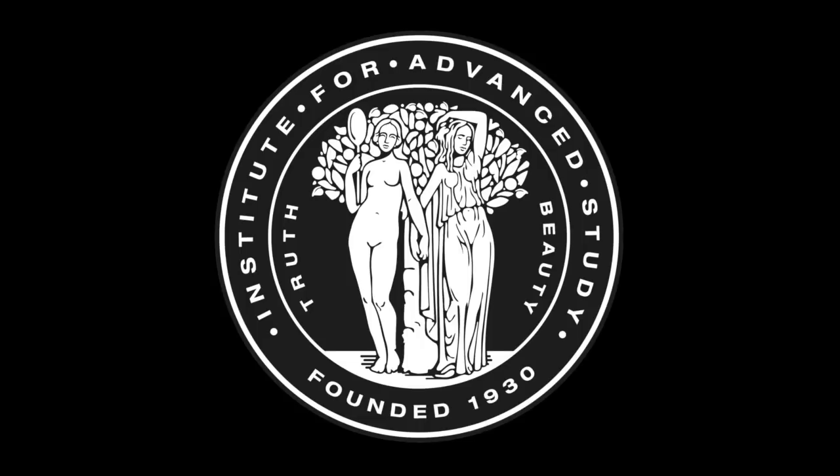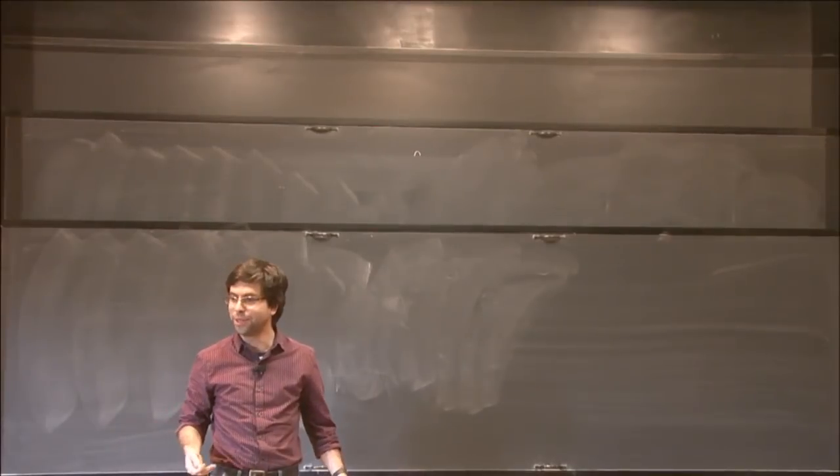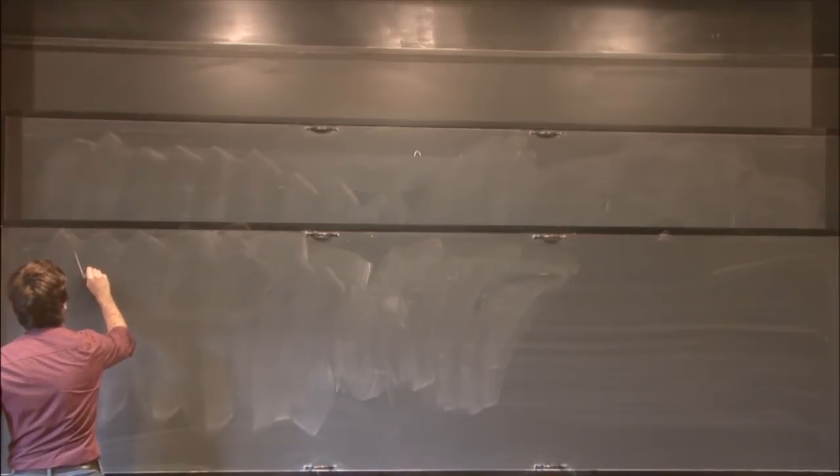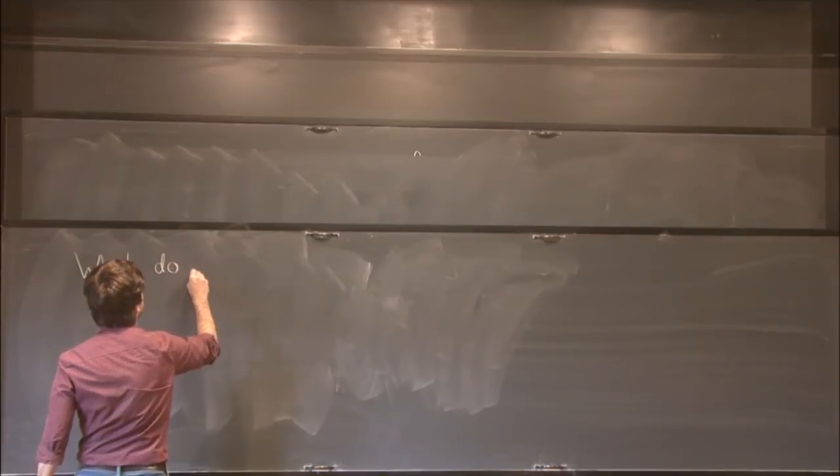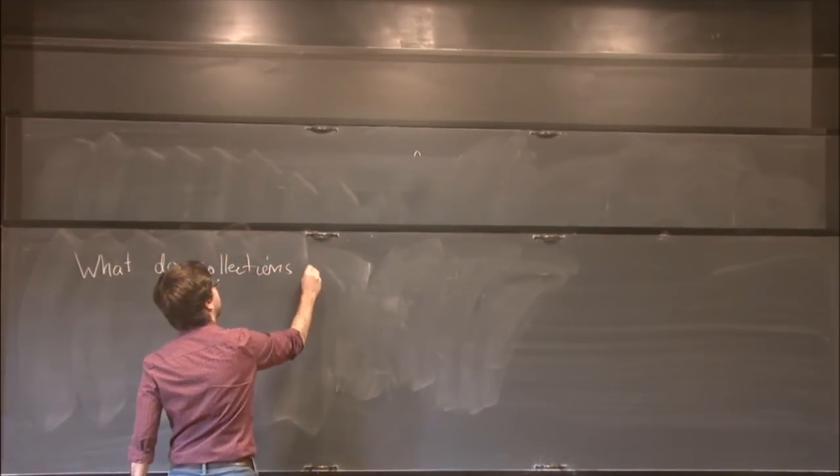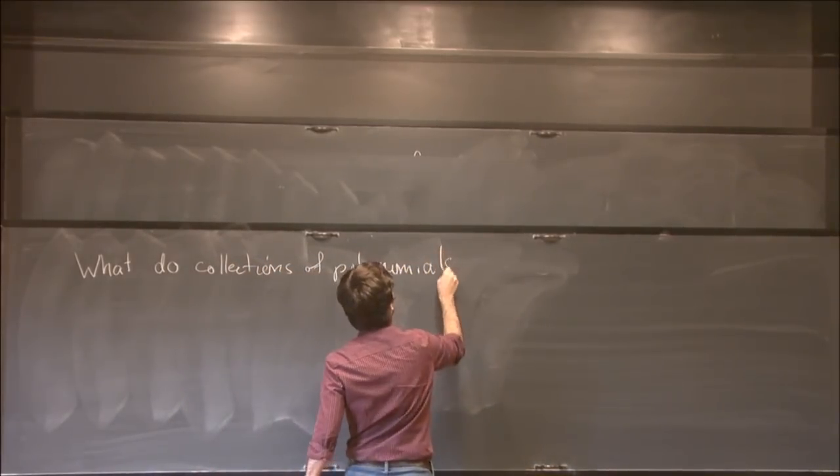Thank you for making it all the way to the end of the week. The basic question which I've been thinking about, and which I guess most of algebraic geometry is about, is what do collections of polynomials look like?